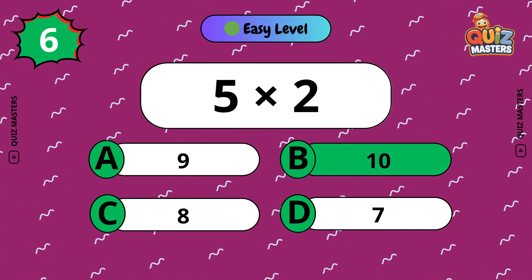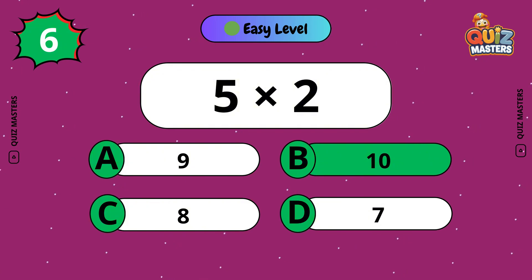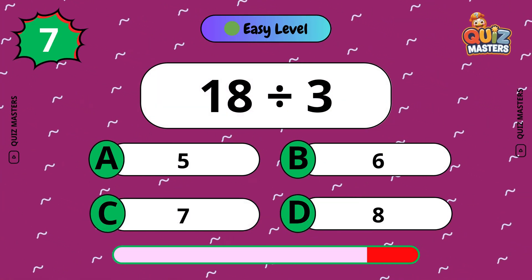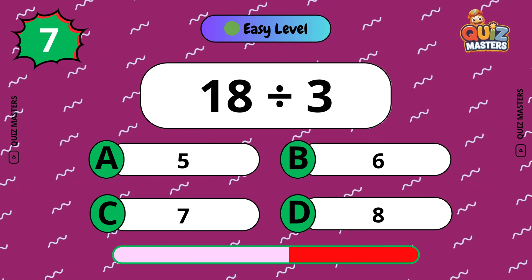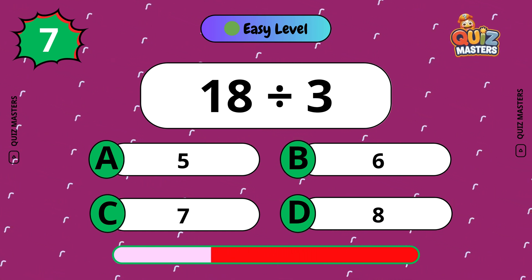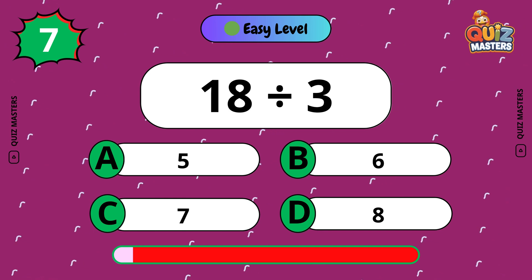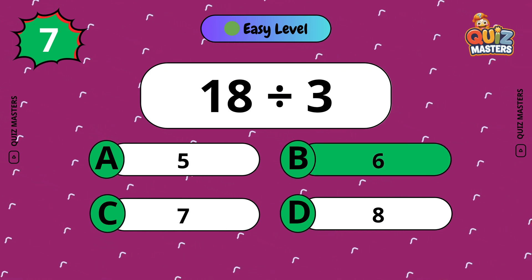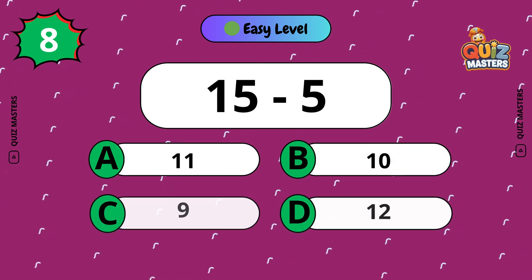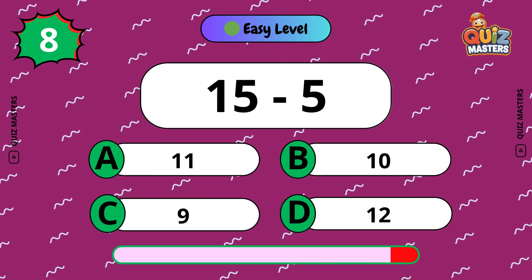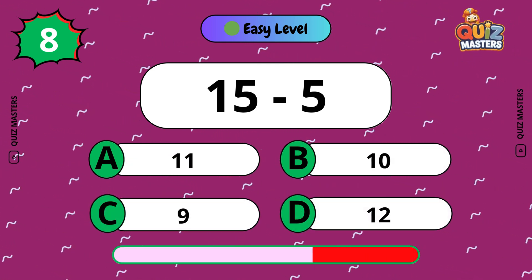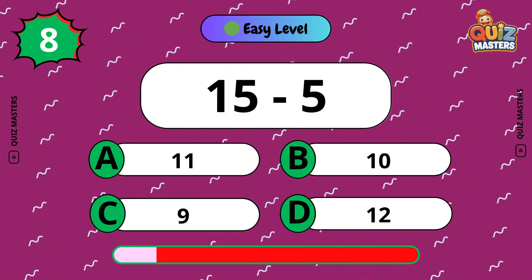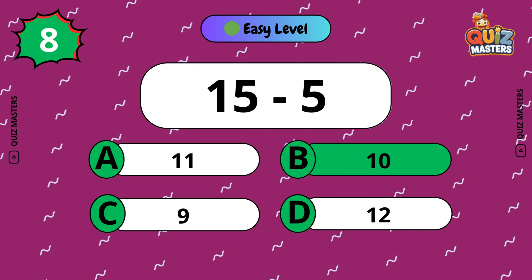5 by 2: 10. 18 divided by 3: 6. 15 to 5: 10.